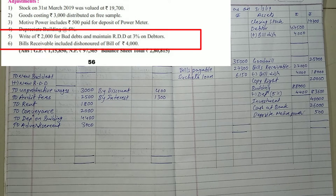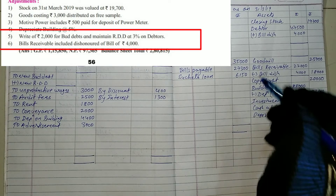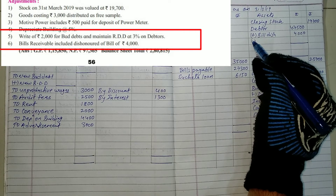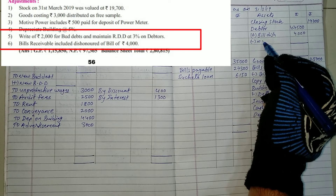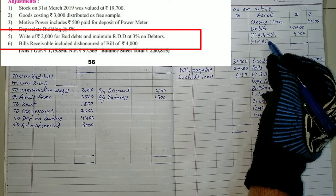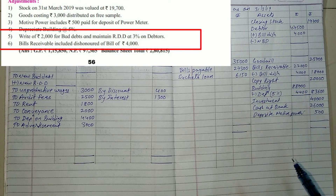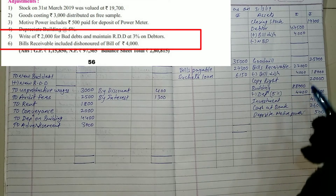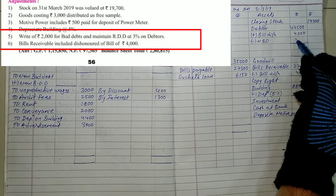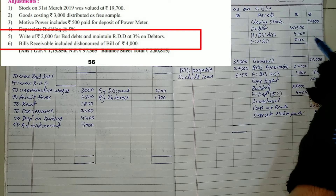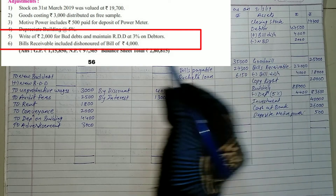We are going to adjustment number five, which is new bad debt and new RDD. New bad debt and new RDD is a common adjustment. The calculation is: debtors balance minus new bad debt. New bad debt is 2,000.